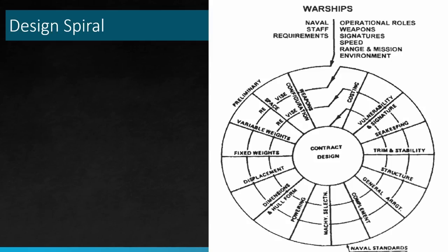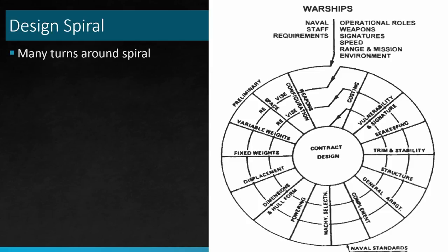As you go around the circle, you figure out different pieces of important information. Eventually with warships, you come to an initial displacement value. From there, you figure out how big a vessel you're looking at, come up with principal particulars and dimensions, create a hull form, figure out resistance and powering needed, select appropriate machinery, figure out crew complement, and start making arrangements. The key idea is that no first turn of the spiral gets you anywhere close to an optimized design — you've got to go through multiple iterations.